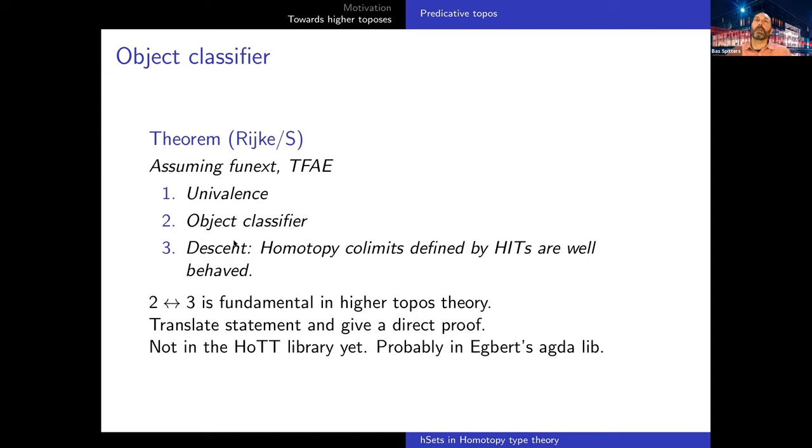And then what we did with Egbert was to show that if you have univalence, then you get an object classifier. We also show that the descent property, and Egbert has a lot of this in his thesis. The descent says that the homotopic colimits, or the higher inductive types if you want, they actually behave well, they behave in the way you expect. So all these three properties are actually equivalent. You can take either of those and derive the other two. As I said, those two are defining properties of a higher topos, and then univalence is an insight from Voevodsky.